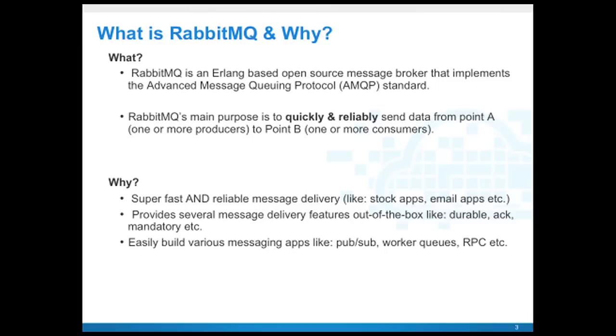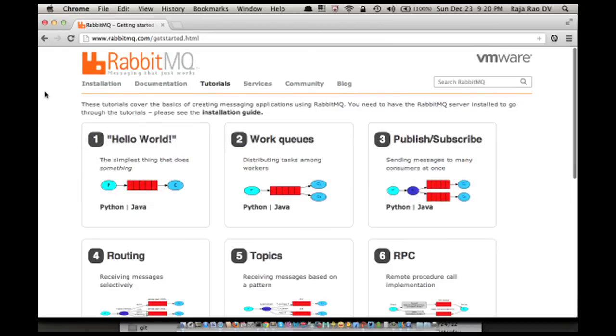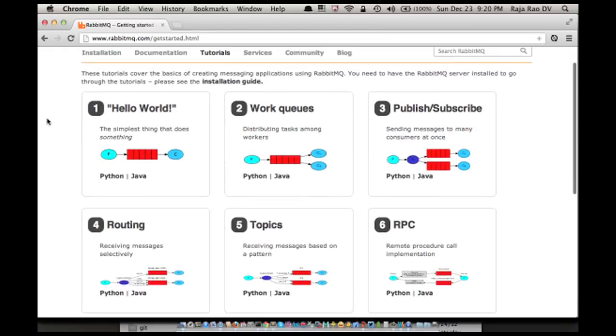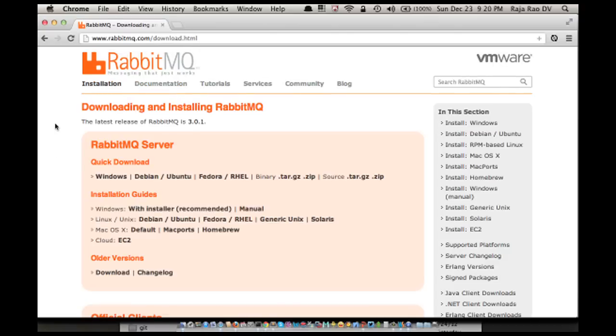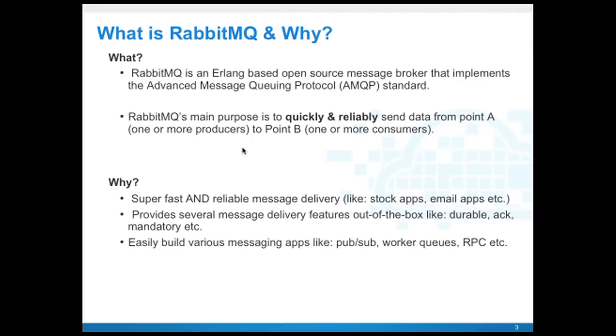Why should we use it? If you're building a stock-based app, financial app, or email application where you care about both speed and reliability of every single message, then you should go with RabbitMQ. Secondly, RabbitMQ provides various message delivery features out of the box like durability, acknowledgments, mandatory messages, and it makes it easier to build messaging apps like pub-sub applications, worker queues, RPC applications, etc. For more, go to rabbitmq.com/getting-started.